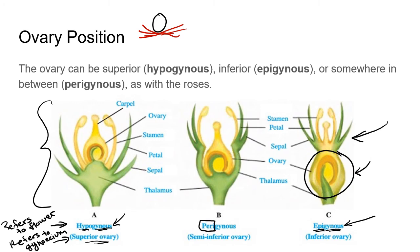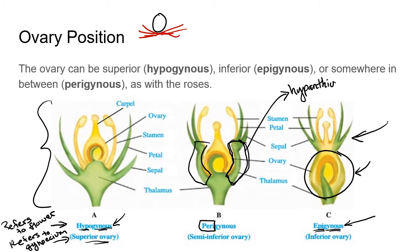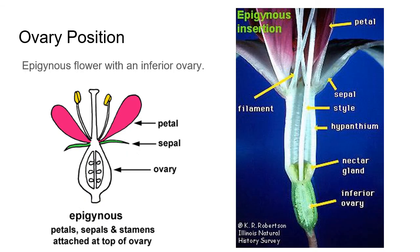The unusual middle case is perigynous — 'peri' means around, so the flower forms around the gynoecium. We see this in the rose family and a few other groups. All floral whorls except the gynoecium fuse together before reaching the receptacle, forming one solid structure called the hypanthium. In roses, this forms the rose hip. A perigynous flower has a semi-inferior ovary.